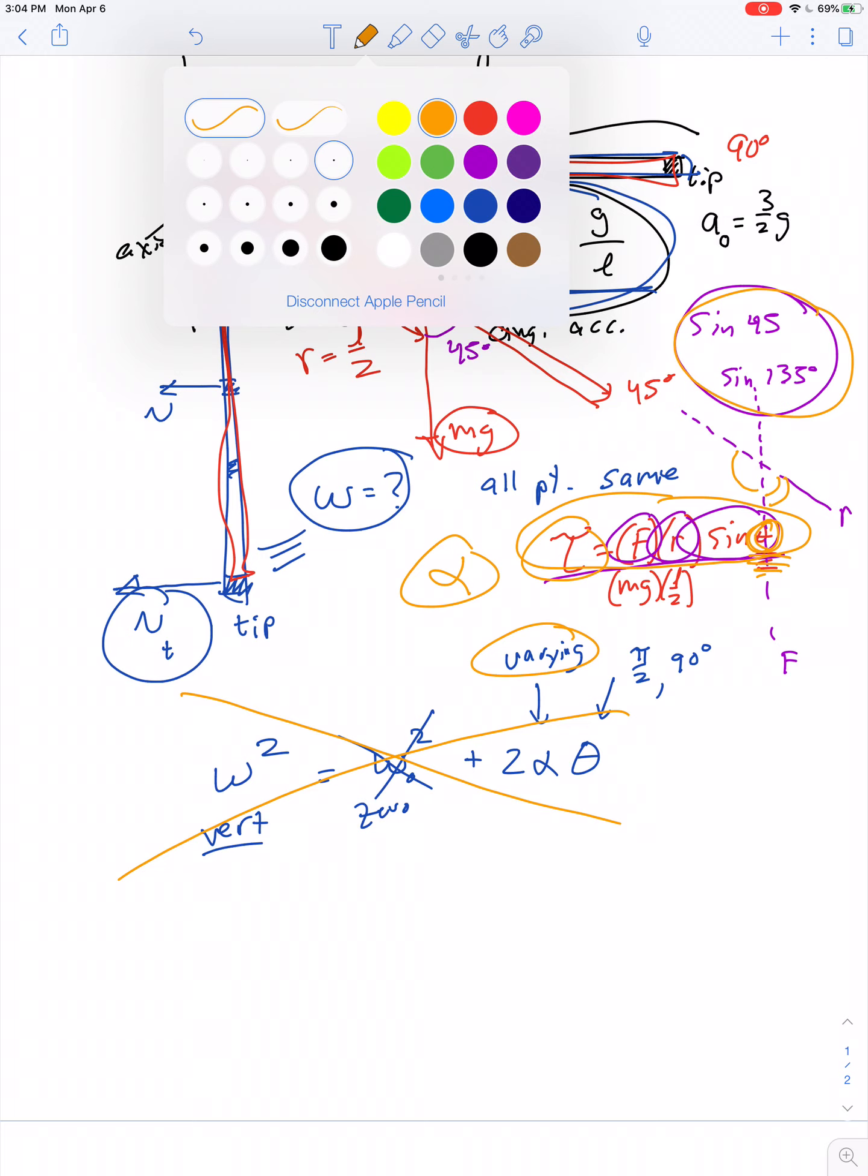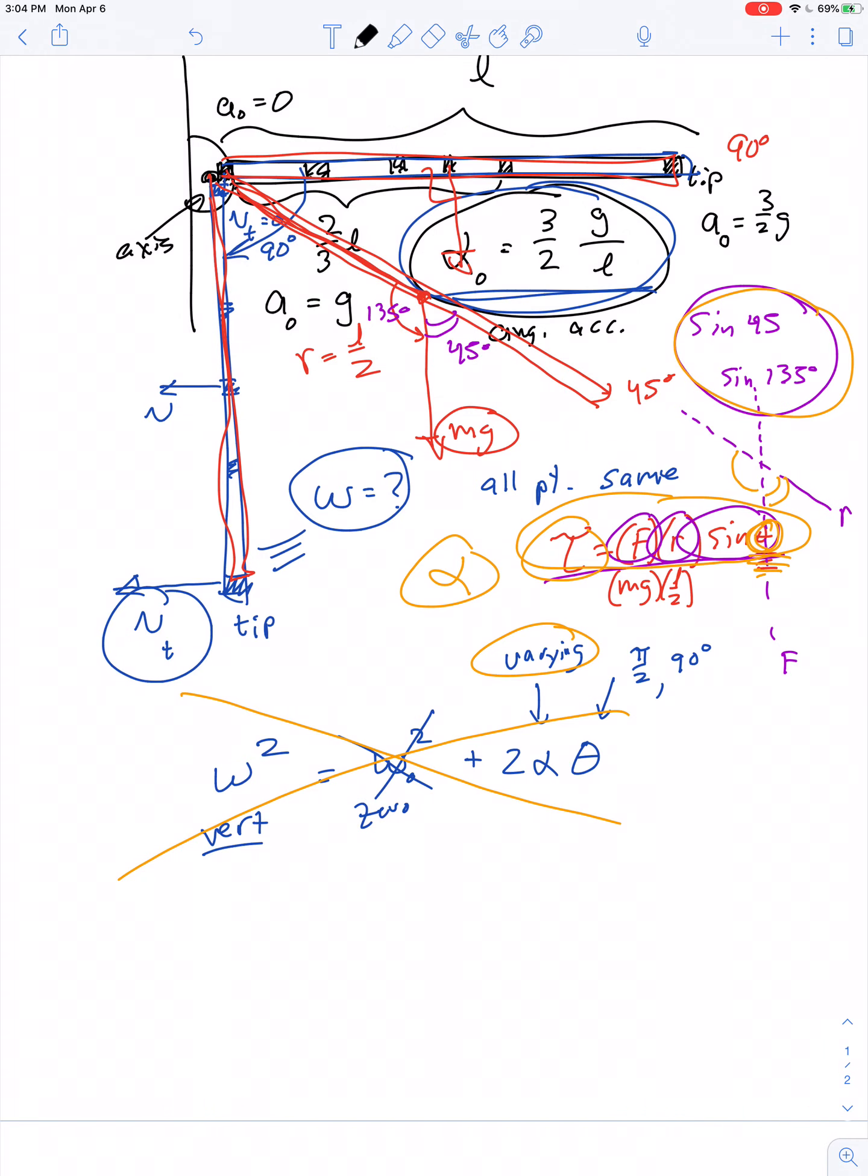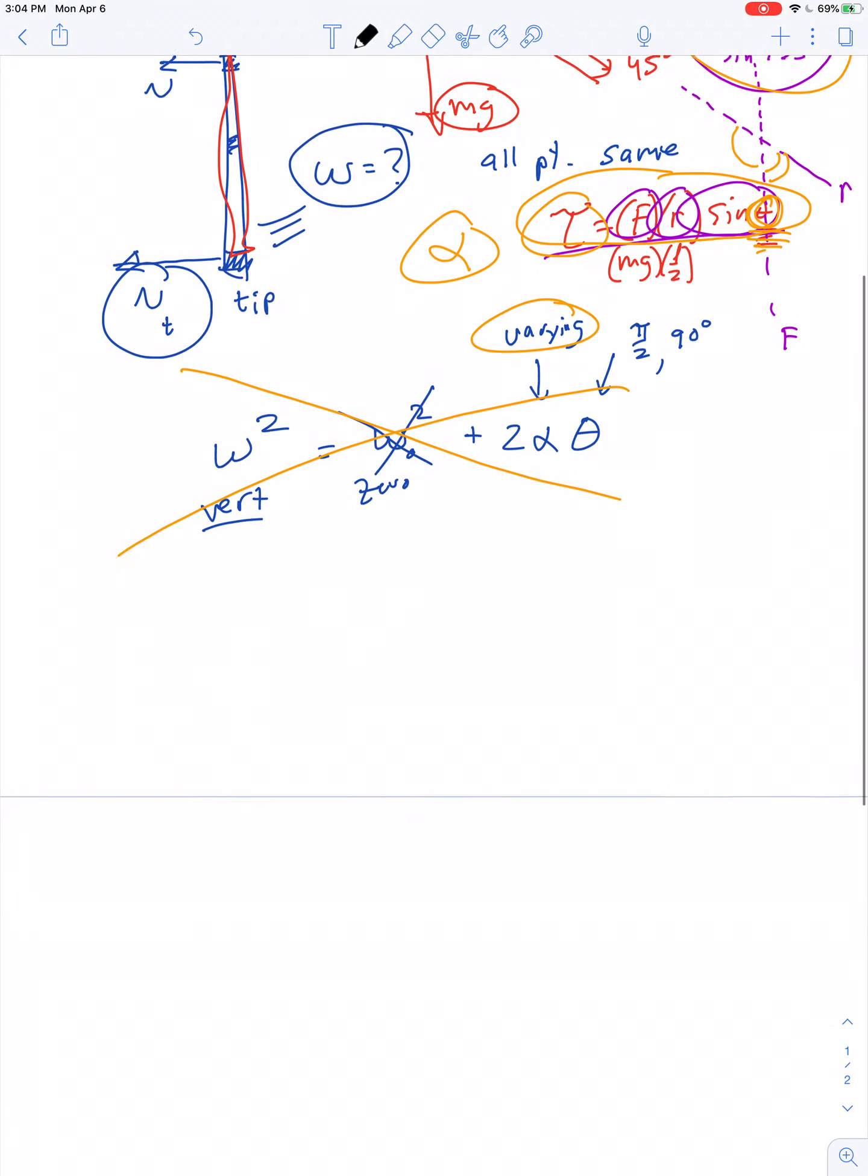But we're not stuck. That's why we have the law of conservation of energy to guide us. Whether or not acceleration is uniform, energy is always conserved. So when a beam starts out in a horizontal position and ends up falling to a vertical position, it's lost gravitational potential energy.